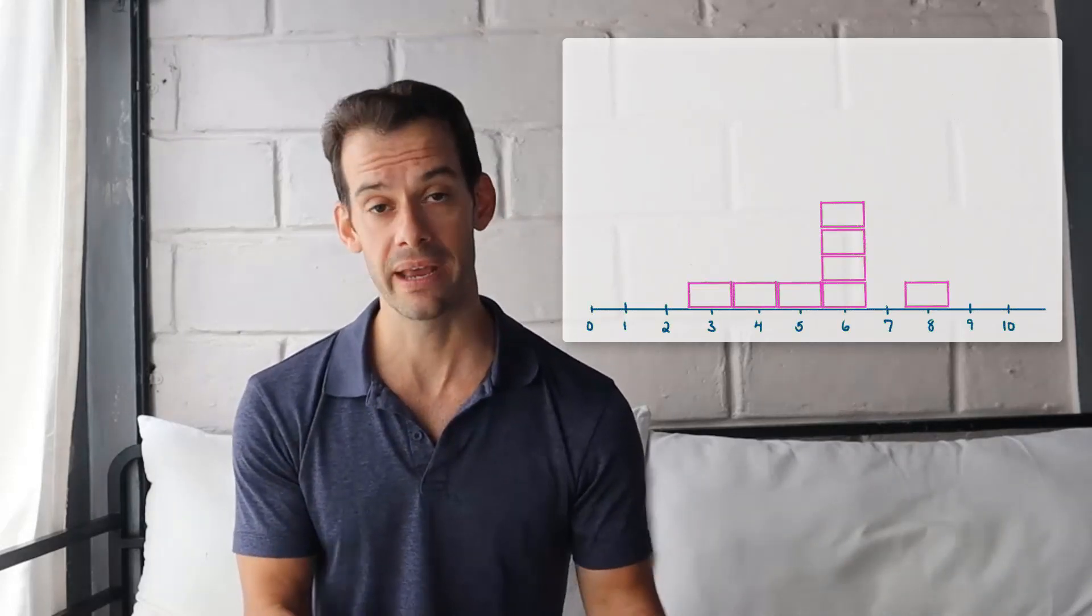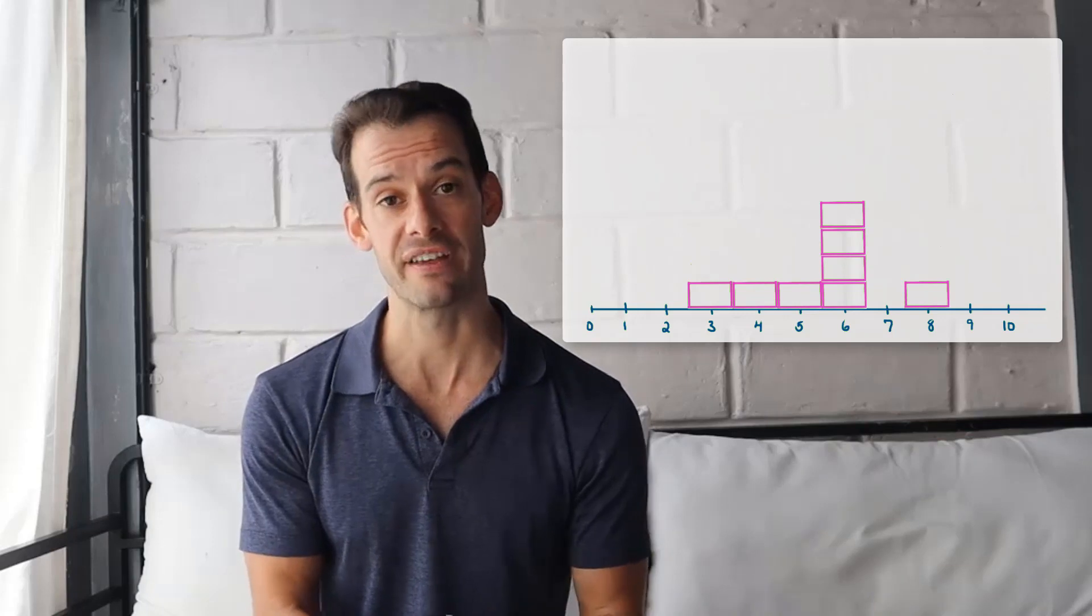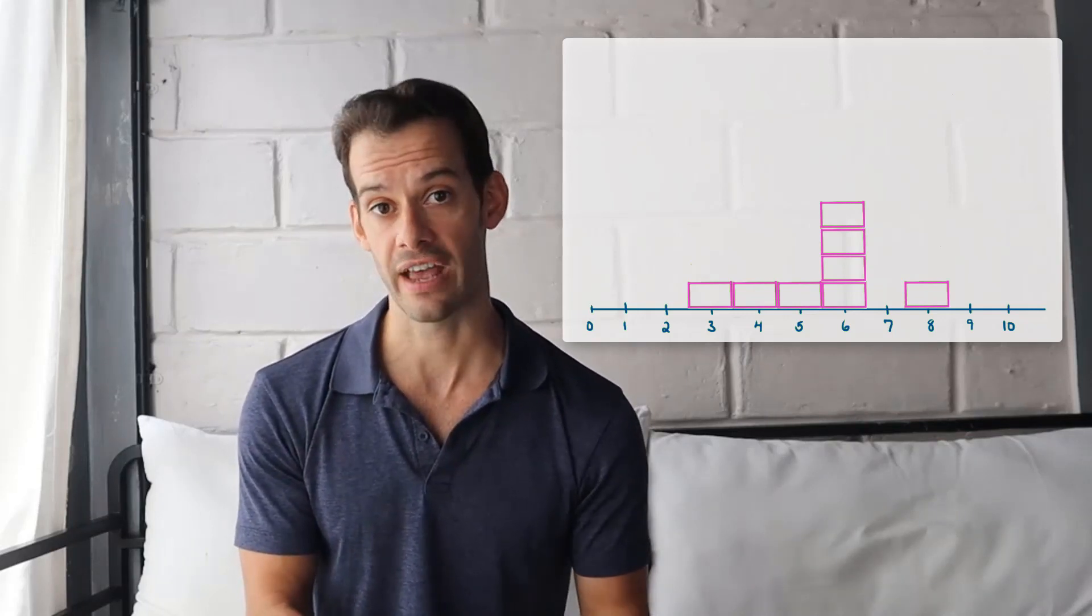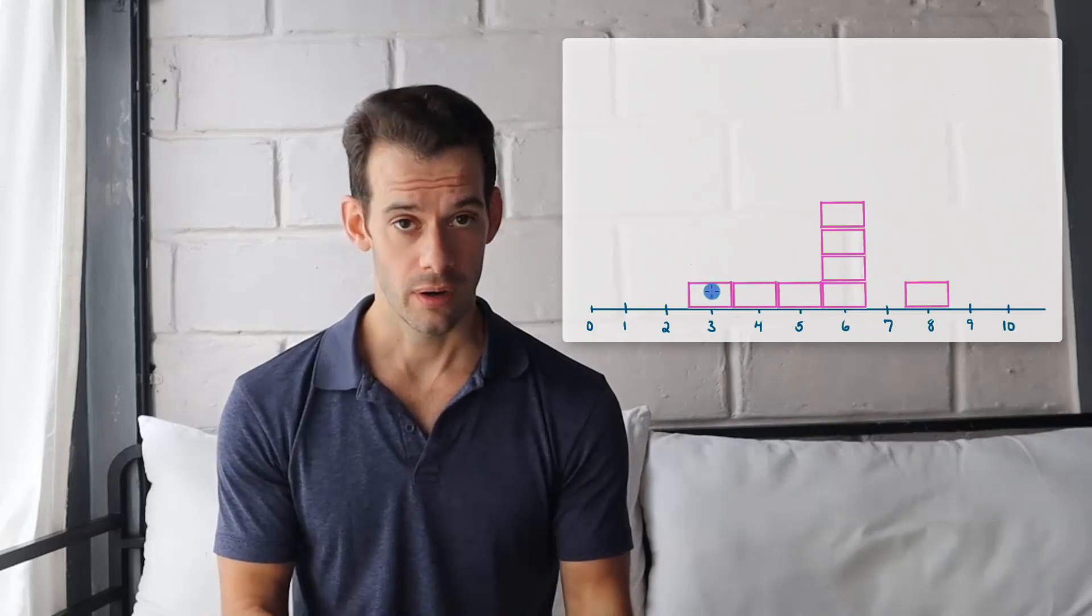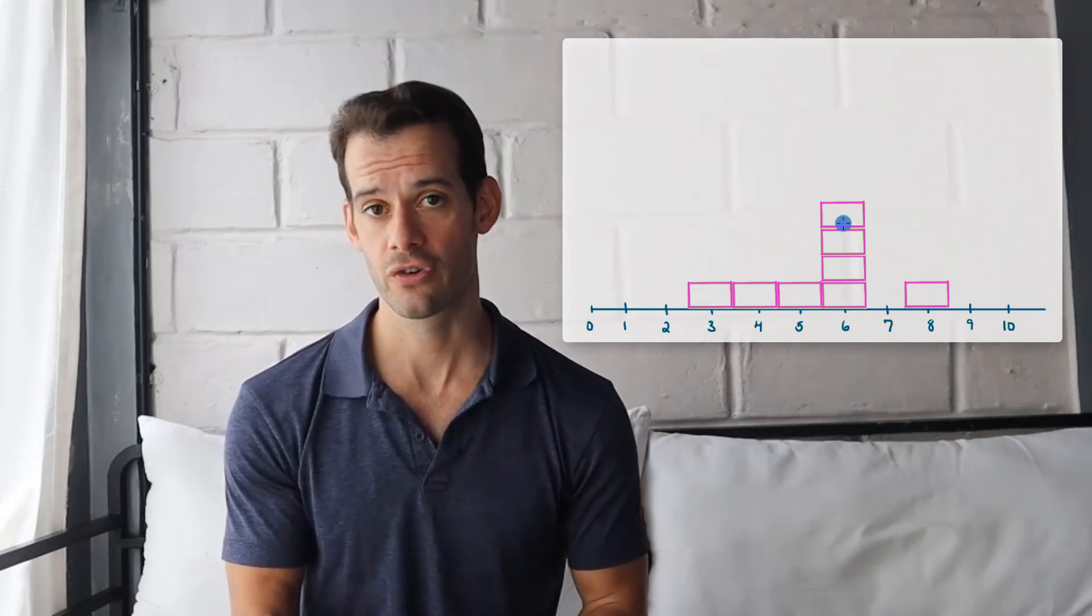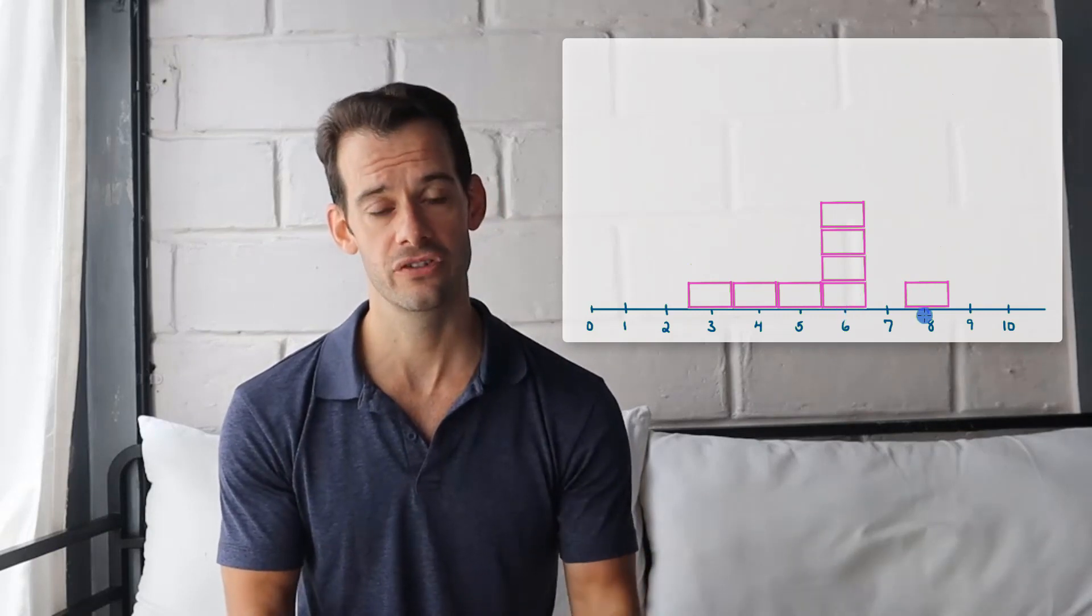So let's draw a picture here where we have our data represented on a line and each block will represent a participant's score in whole seconds. So we have a score at 3 seconds, 4 seconds, 5 seconds, then 4 scores at 6 seconds, and 1 score at 8 seconds.